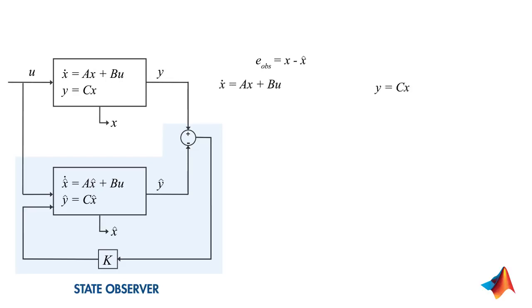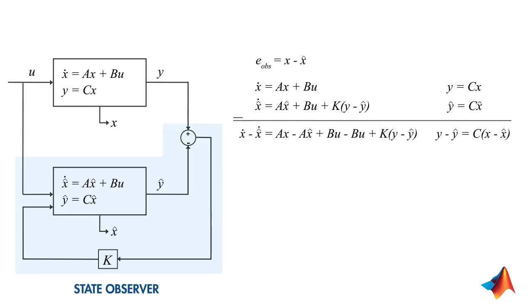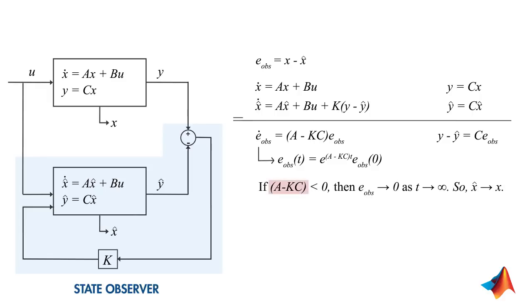Next, let's write down the equations for the system and the observer. If we subtract these equations from each other, this will give us the error dynamics. By rearranging terms, we see that the error dynamics can be shown by this equation. The solution to this equation is an exponential function. What this means is, if this term is less than 0, we're good because we know that our error will vanish over time and x hat will converge to x.